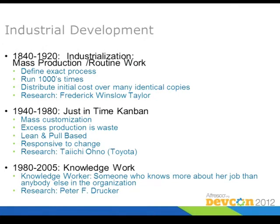The first guy who did research on these things was Mr. Taylor. And in the 1940s, some guy from Toyota thought it was stupid to produce, say, a certain car part ten thousand times — because then it sits in the warehouse, gets lost, gets broken. Or if you want to change the model because the part isn't working well, you still have ten thousand pieces in the warehouse and have to dispose of or write off the existing stock. So he said mass production is not good — mass customization is good, and excess production is waste.